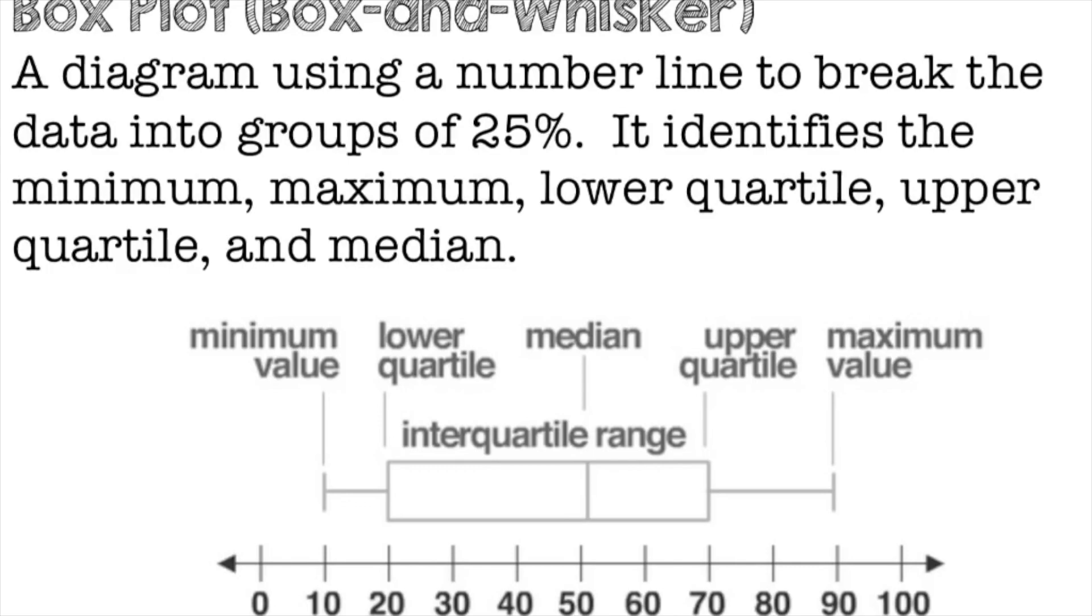Quartiles are four groups of 25%. So essentially, from here to here, that's 25%. From here to here, that's another 25%. From here to here is another 25%, and then we've got our last 25% here.